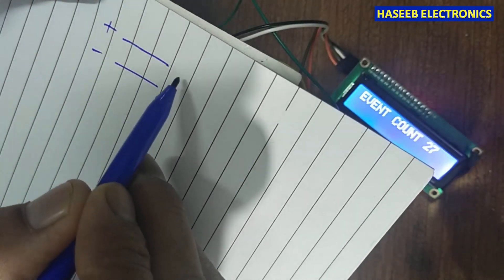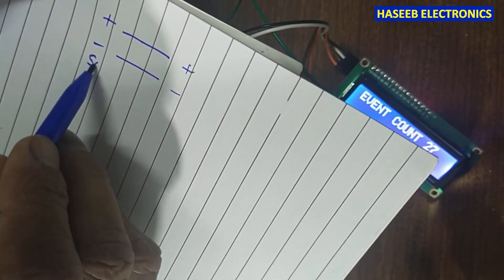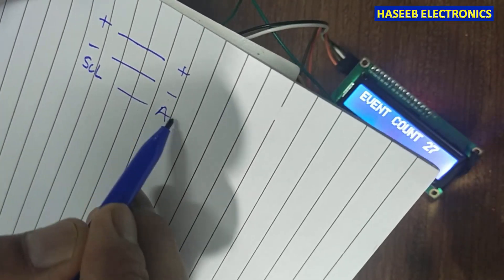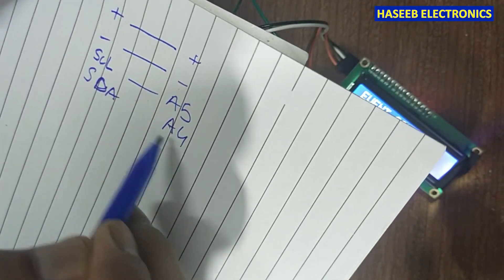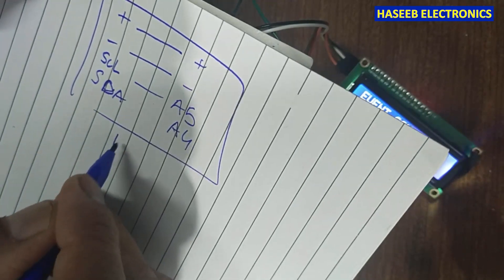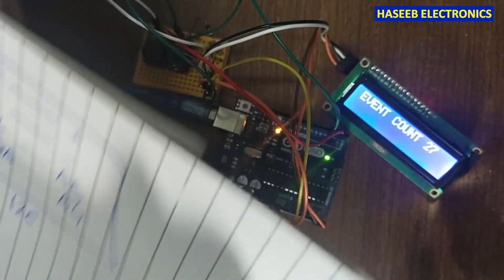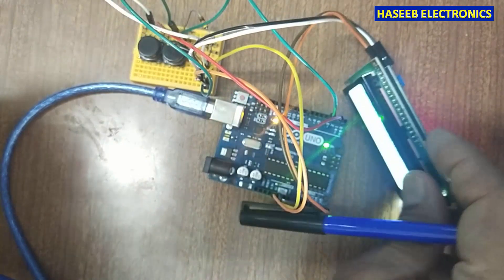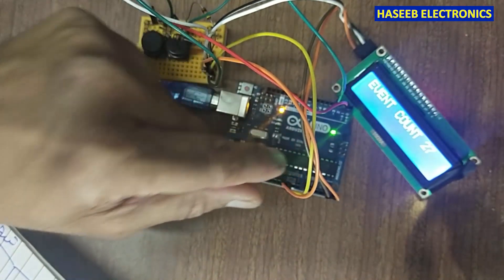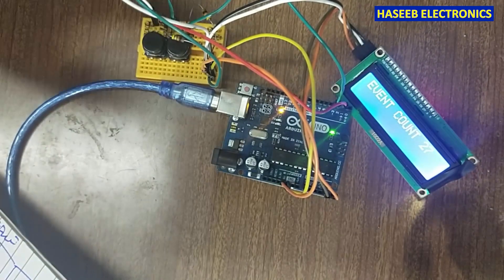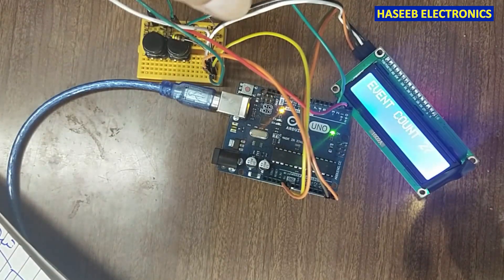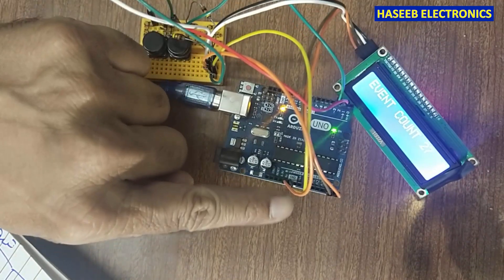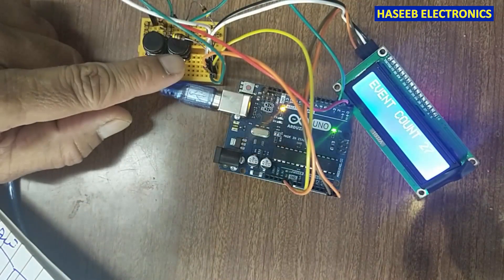Positive to positive, negative to negative, SCL pin to A5, SDA to A4. These are the connections for the I2C LCD — it has an I2C interface. We are taking positive and negative voltage and providing it to the rail. The same voltage, positive and negative, is reaching the LCD.